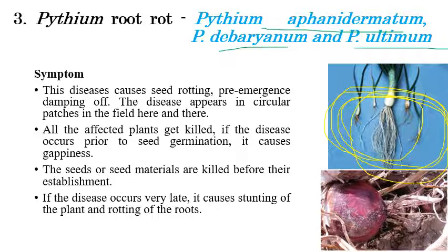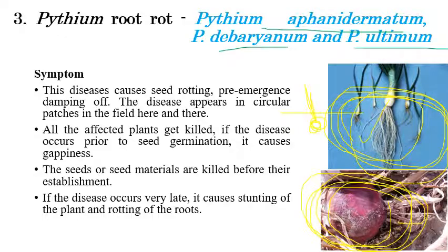In pre-emergence damping off, affected plants get killed in the soil itself — before seed germination or before emergence from the soil. The seed or seed material gets killed inside the soil. In post-emergence damping off, germinated materials are rotted and killed after emergence from the soil. Post-emergence damping off also causes stunting and rotting of roots.